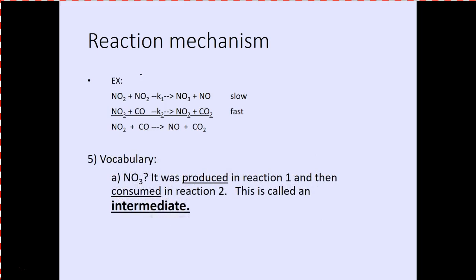Vocabulary: first, intermediate. In this case, NO3 — nitrogen trioxide — was an intermediate. It was produced in reaction one and consumed in reaction two. It was needed to make the reaction go, but it's not part of the final reaction. Intermediates are things produced in one step, used up in another step, but don't occur in the final reaction.